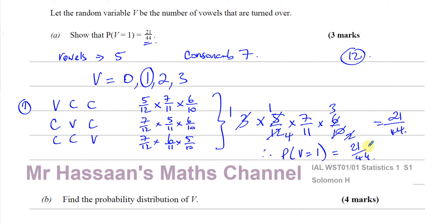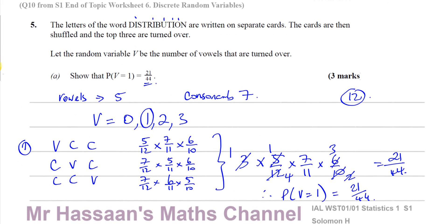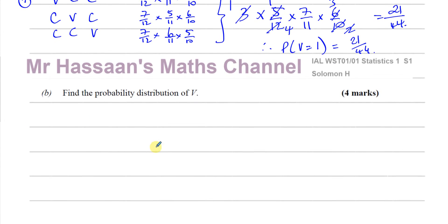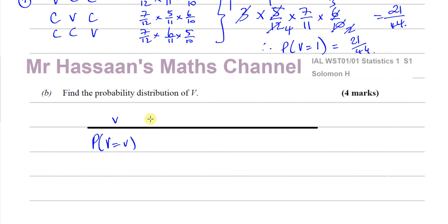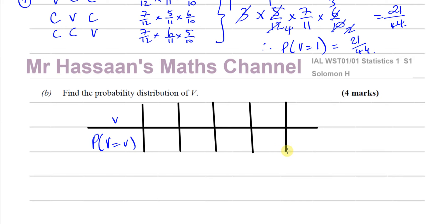Now we need to find the full probability distribution of V. We make a table with V taking values 0, 1, 2, and 3, and the corresponding probabilities. We already know P(V=1) = 21/44, so now we need to find the probabilities for the remaining values.